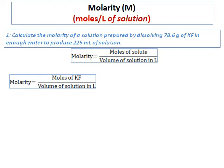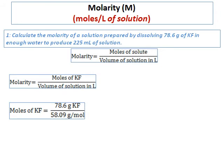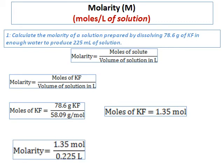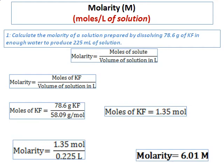Moles of KF equals grams of KF divided by molar mass: 78.6 grams divided by 58.09 grams per mole gives 1.35 moles. The volume of solution is 225 milliliters, which converts to 0.225 liters. Therefore, molarity equals 1.35 moles divided by 0.225 liters, which gives a molarity of 6.01 M.